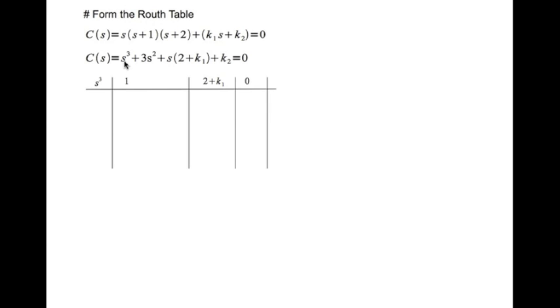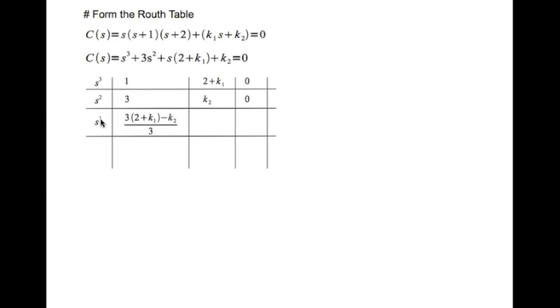We get the characteristic equation and expand it. Writing the Routh table: the s^3 row has its coefficients, the s^2 row has its coefficients including a zero, the s^1 entry is (3(2 + k1) - k2 × 1) / 3, and the next entry is zero. The s^0 row has one element obtained by multiplying through, giving k2.